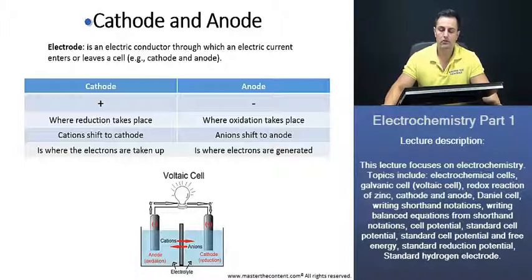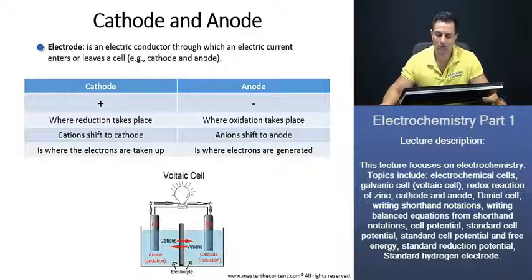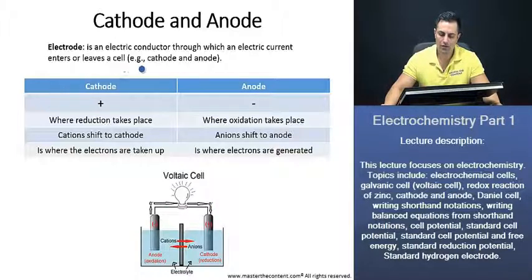Cathode and the anode. Firstly, a cathode and the anode is an electrode. And what is an electrode? Well, an electrode is an electric conductor through which an electric current enters or leaves the cell. Now, that's exactly what we see here. We have our anode and our cathode, our electrodes, where we have our electric current taking place as follows. So let's talk a little bit about the cathode first, then we'll talk a little bit about the anode.